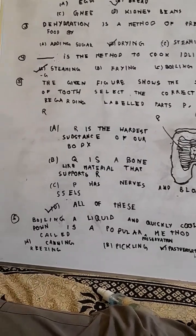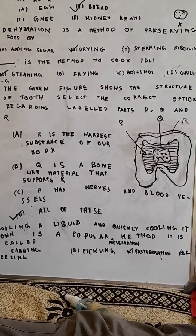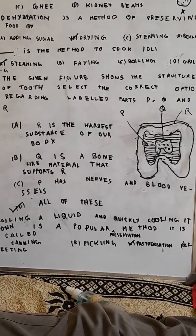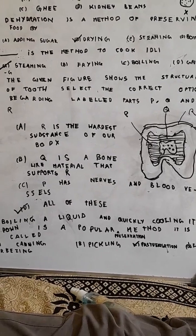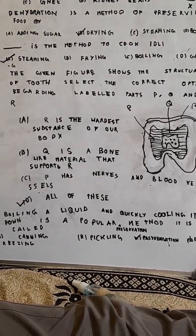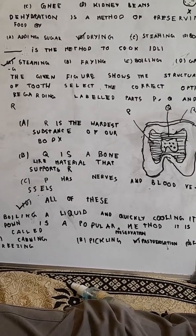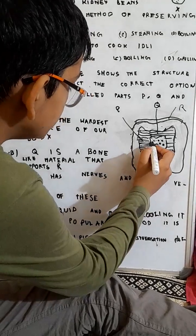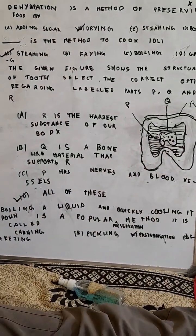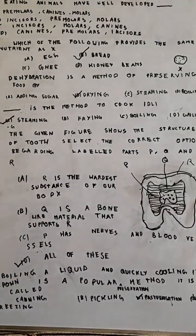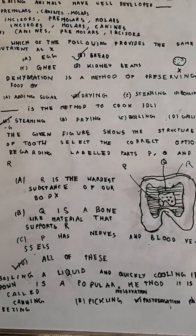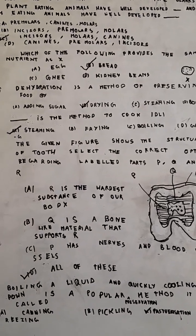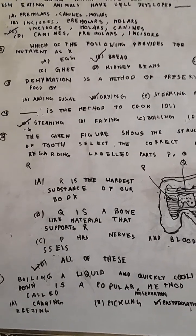The given figure shows the structure of a tooth. Select the correct option regarding labelled parts P, Q, and R. R is the enamel and it's the hardest substance of our body. Q is a bone-like material that supports. P has nerves and blood vessels — this is also true. So the correct option is option D, all of these are true.